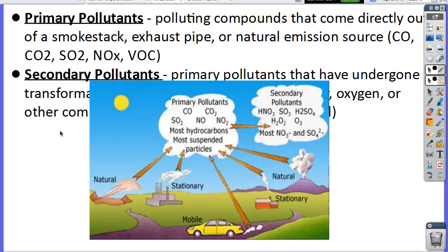We're going to start with primary and secondary pollutants. You can find this in your note packet on the third page. The reason we're talking about smog today is because smog is a secondary pollutant — a pollutant that is created from the reaction of an initial pollutant with water, air, sunlight, or something like that.